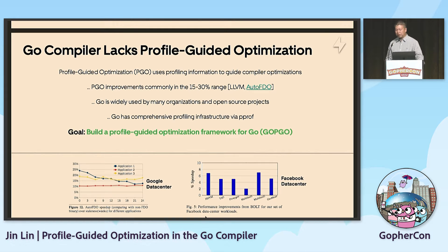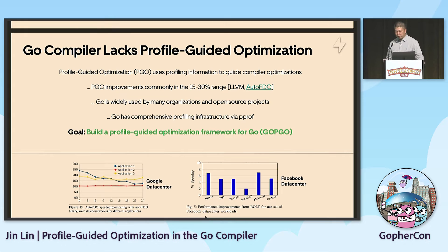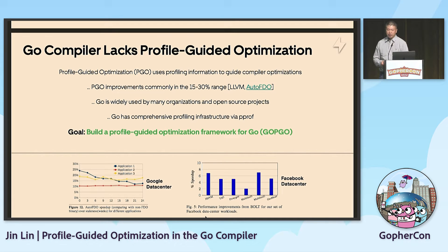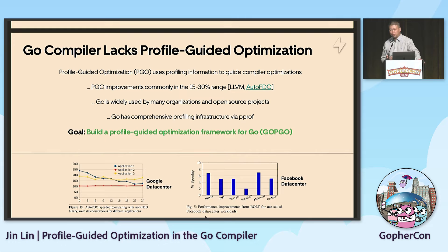Go was released in 2012 and is widely used by many organizations and open source projects. Go has comprehensive profiling infrastructure via pprof. But unfortunately, the Go compiler does not support profile feedback optimization. Our goal is to build a profile-guided framework for Go.